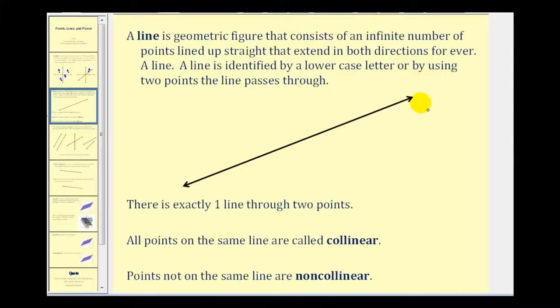And a line can be identified two ways. One way is by a lowercase letter. The other way is by using two points that the line passes through. So if this was point M and this was point N, we can identify this line as line MN and we can put a little line above the two capital letters. If we introduce another point on this line, let's say O, we can call this line MO or line ON and so on.